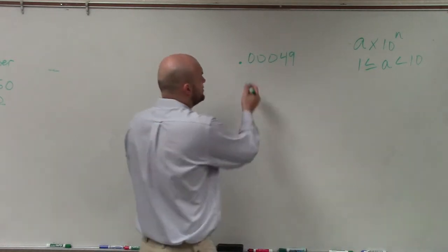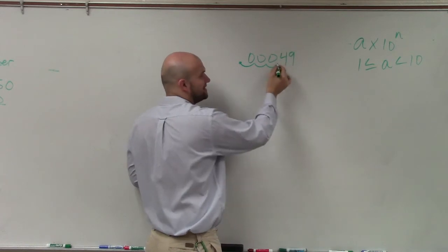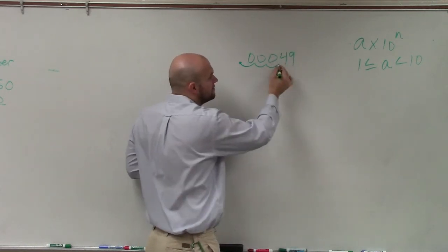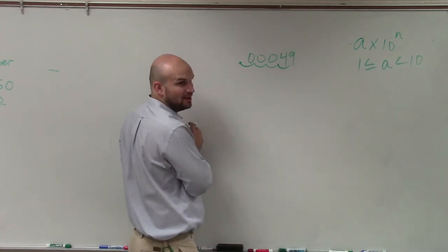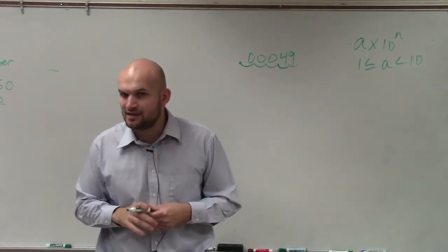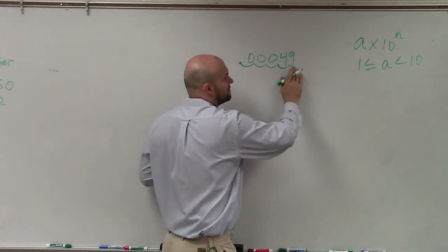So when we're moving our decimal point, should I leave it right there? Is 0.49 between 1 and 10? No. Is 4.9 between 1 and 10? Yes, and if I went over here, that'd be 49. 49 is not between 1 and 10. So therefore, I have to leave it right here.